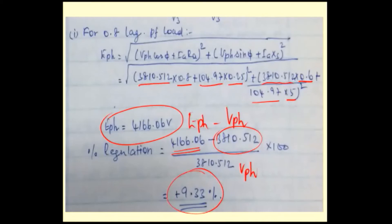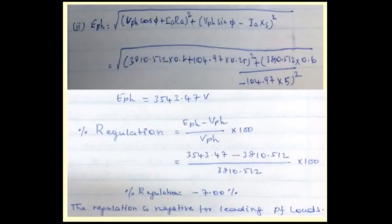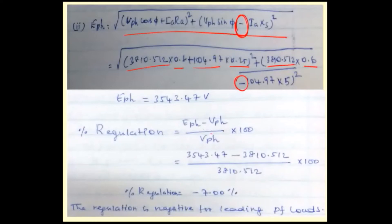For 0.8 power factor leading, use the same formula but with a minus sign for the Ia·Xs term. All other values are the same: V-phase = 3810.5 V, cosφ = 0.8, sinφ = 0.6, Ia = 104.97 A, Ra = 0.25 Ω, Xs = 5 Ω. The E-phase value comes out to 3543.47 V, and the percentage regulation is −7%.